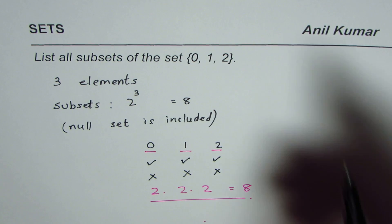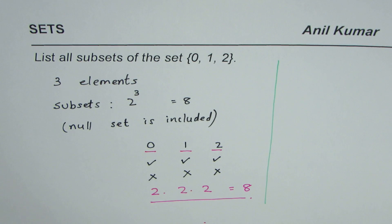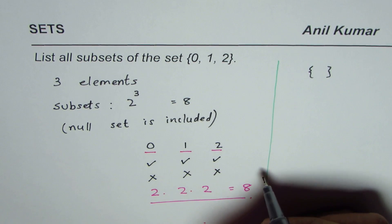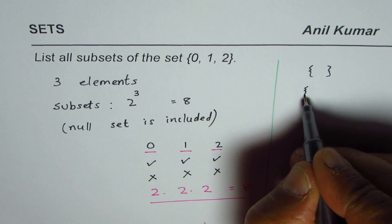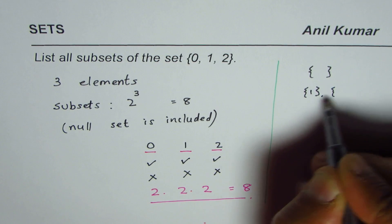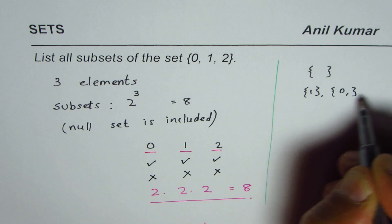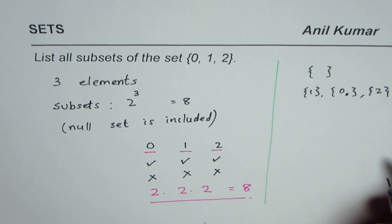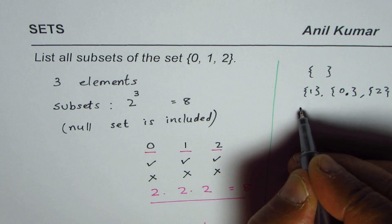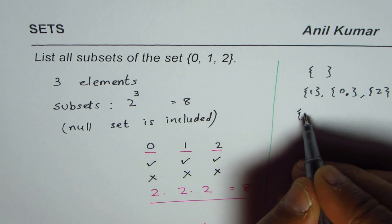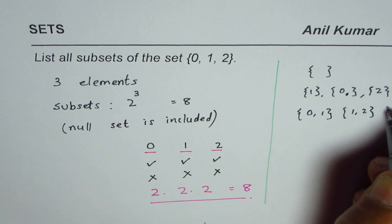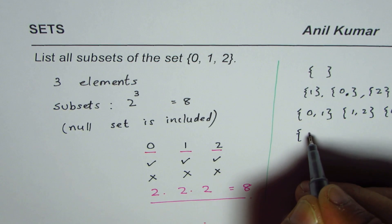The other option you could do is like this: you can have the null set, not selecting any one of them. Or you could select just one—0, 1, or 2. Or you could select a combination of two—for example, {0,1}, {1,2}, and {0,2}. Or a combination with all three.